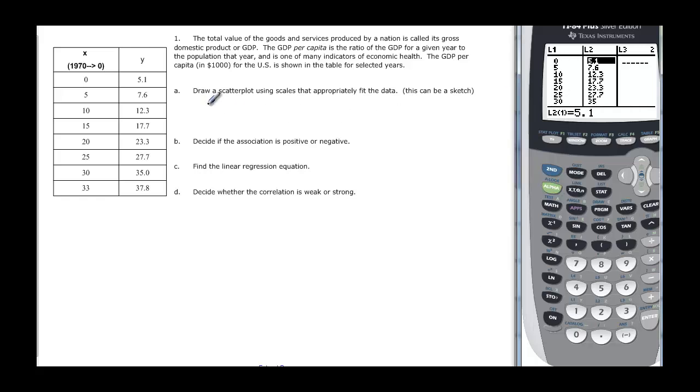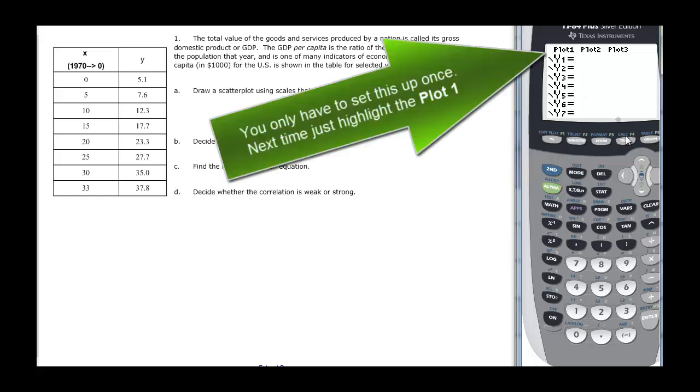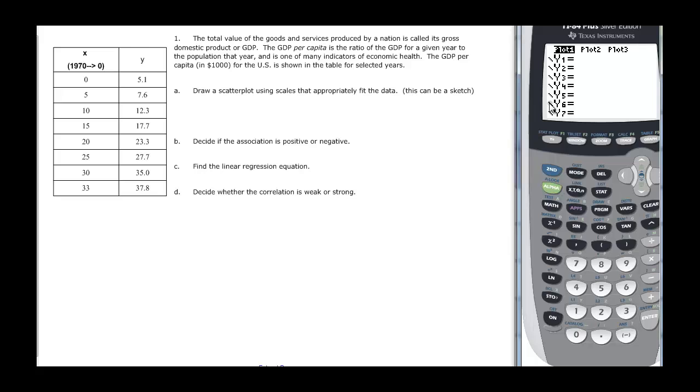We have all this data here, and the first thing it asks us to do is to draw a scatter plot. The calculator will do that, and then we can just sketch it. To do that, you go to Y equal, and then you see this plot one up here at the top? We need to arrow up there, and then we want to press enter, and that will highlight it for us. Now I want to do one extra thing for you. If you do it once, you shouldn't have to do it again, and that is to do second Y equal, and that's just going to set up the plot. You'll see here it says the plot one is on, but we want to enter there, because what you need to see is this type here that I have highlighted, the very first one, says that it's going to be independent dots, and that's the best way to look at a scatter plot.